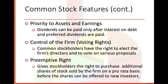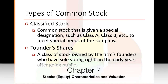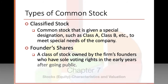Keep that in mind — that preemptive right wasn't an option with preferred stock. Types of common stock: classified stock is a common stock given a special designation such as class A, class B, etc. to meet special needs of the company. Founder shares are a class of stock owned by the firm's founders who have sole voting rights in the early years of going public.